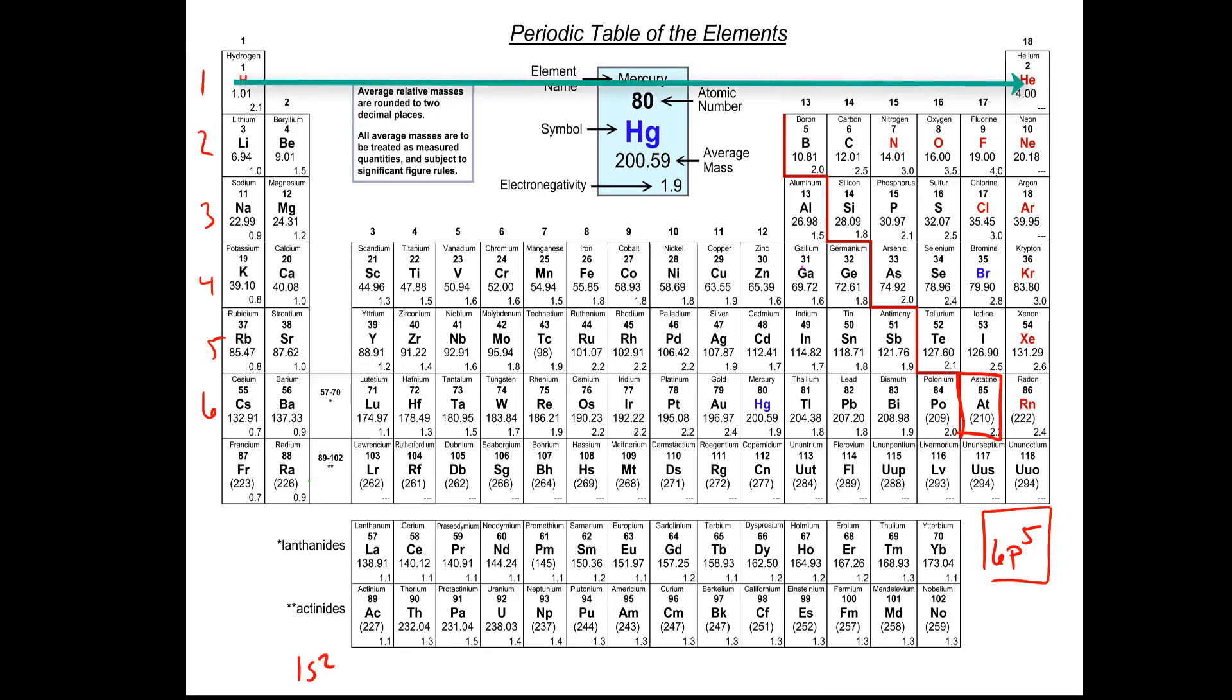So this should be the last thing that we write. So we have 1s2 followed by 2s2 and then 2p6, 3s2, 3p6, 4s2. Remember, now that we move into the d's, the d's are always one number below, so 3d10, 4p6, 5s2. We're down to the d's again, so 4d10, 5p6.